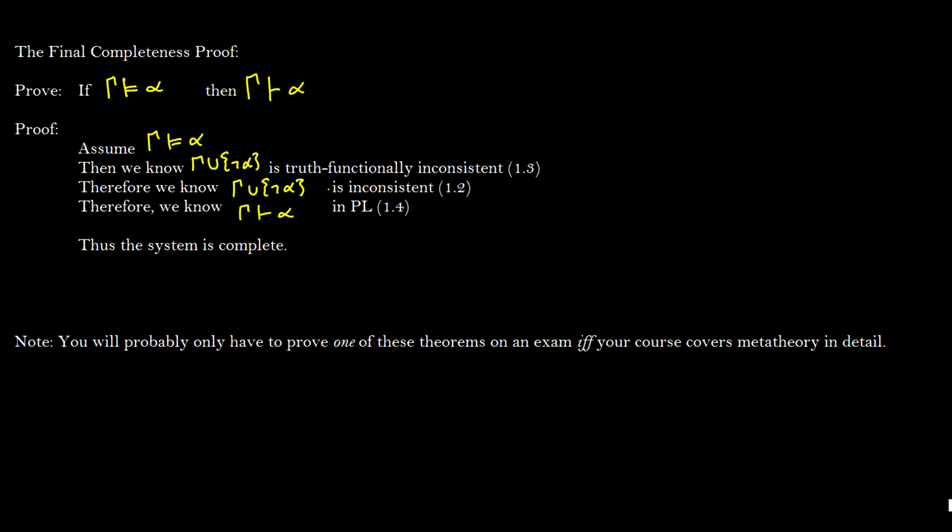Here's the full completeness proof. If gamma entails alpha then gamma proves alpha. That's what we want to know. So first we assume that okay we have gamma entailing alpha. So that means that if we have gamma and not alpha then